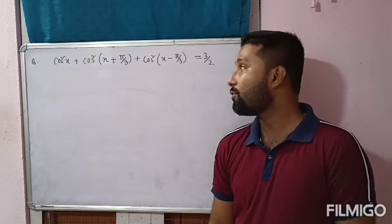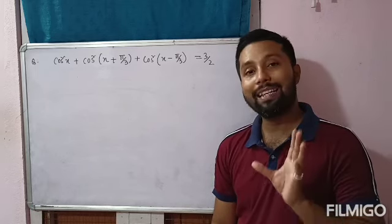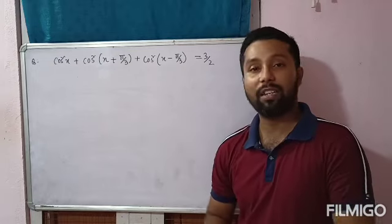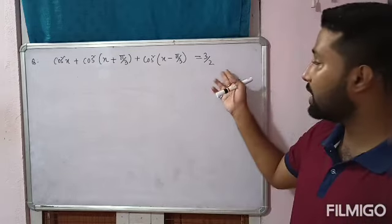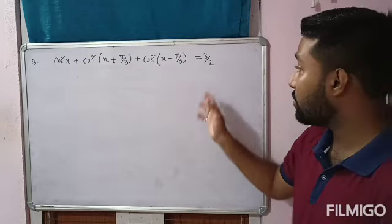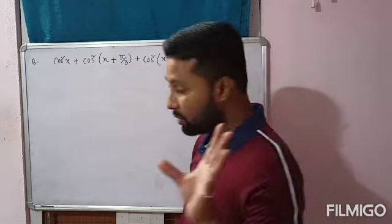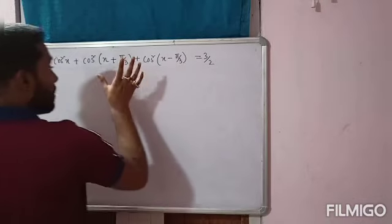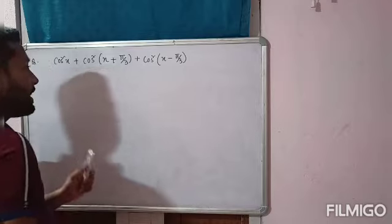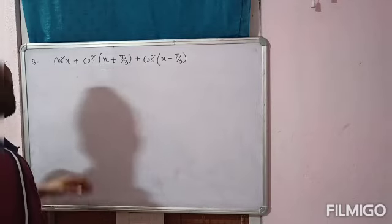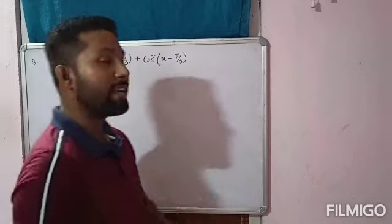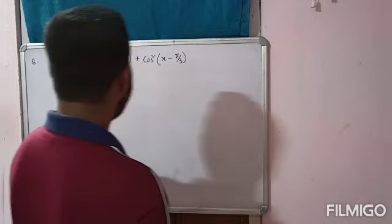So, which means you have to apply the formula in such a way that we can eliminate those functions from the left hand side. Because on the right hand side there is no trigonometric function — there is only one constant term, that is 3/2. So you have to think about which formula to use on the left hand side. This is the left hand side part: cos²x, cos²(x + π/3), and cos²(x - π/3).